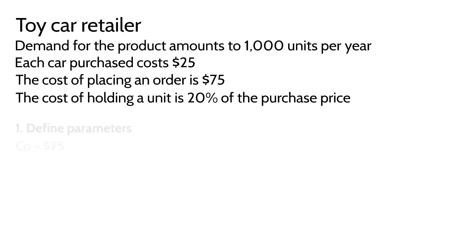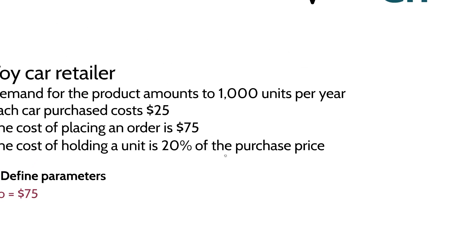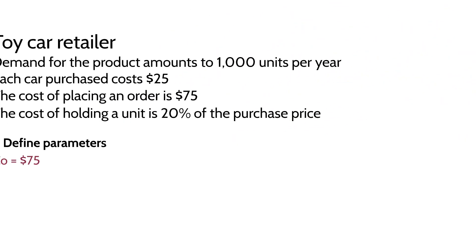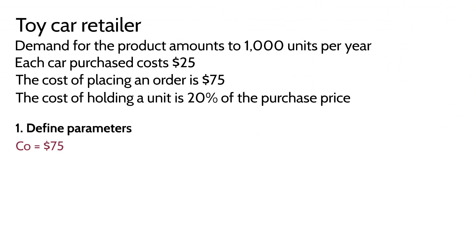Step one of this process is to define the parameters. The first parameter is CO. As you may remember from up here, CO is the order cost of one order. Well the order cost given in this example is $75. So CO is $75. Our demand is 1,000. And then lastly our holding cost is $5. How do you get that? If you multiply $25 which is the car purchase price, this figure up here, multiply this figure by 20% and you'll get the cost of holding per unit.